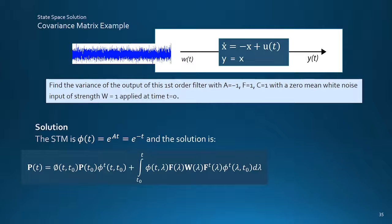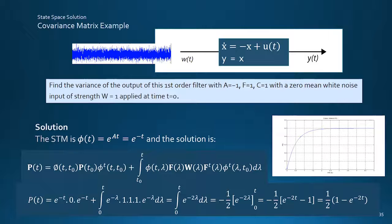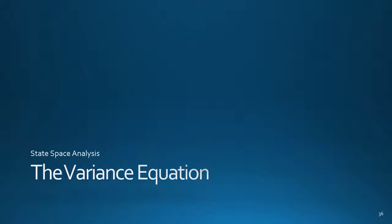For simple systems like our first order low pass filter example, we can find the state transition matrix and solve this equation, showing an exponentially increasing output variance up to a steady state value of 0.5, with a time constant of half a second. Unfortunately, for most practical systems, it's usually pretty hard to solve this thing either analytically or numerically. So the plan is to differentiate the solution to get the variance equation, a first order equation in the rate of change of covariance that can be solved by numerical integration.